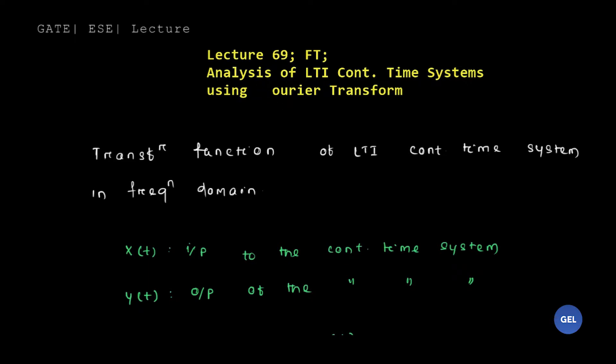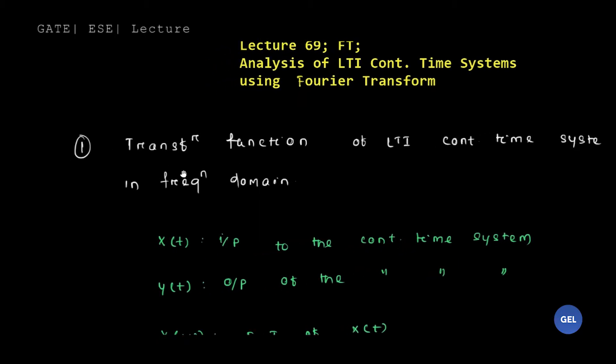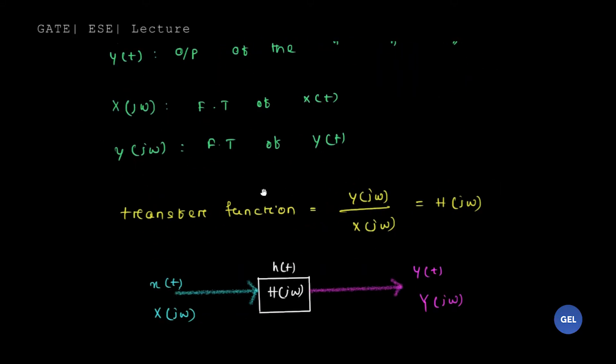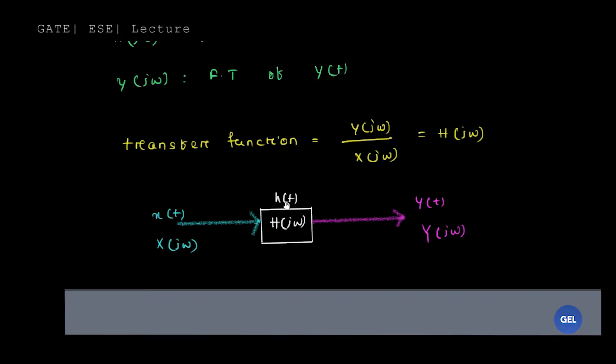This is Fourier Transform. Now the first point is nothing but a very simple point: the transfer function of LTI continuous time system. We know if there is a system whose impulse response is h(t).